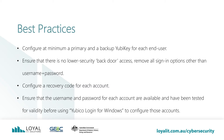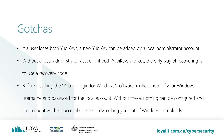Configure a recovery code for each account. During the setup wizard, you will have the option to create a recovery code which can be used to log into your account in a pinch. This is a 64 character long code, so you'd be best securely storing it in a password manager. Ensure that the username and password for each account are available and have been tested for validity before using YubiKey Login for Windows to configure those accounts. If you don't do this first, you could lock yourself out of the workstation when the Login for Windows software is installed. There are some gotchas. If a user loses both keys, a new YubiKey can be added by a local administrator account. It is best practice to have a secondary admin account on all workstations. Without a local administrator account, if both YubiKeys are lost, the only way of recovering is to use a recovery code.